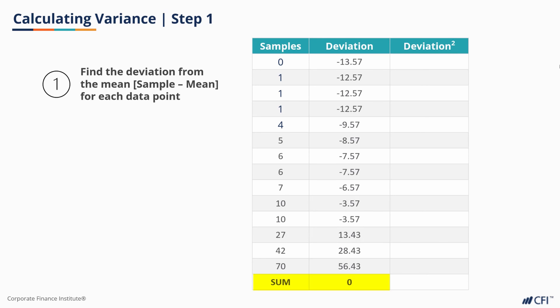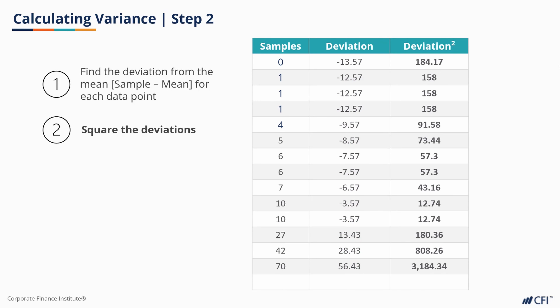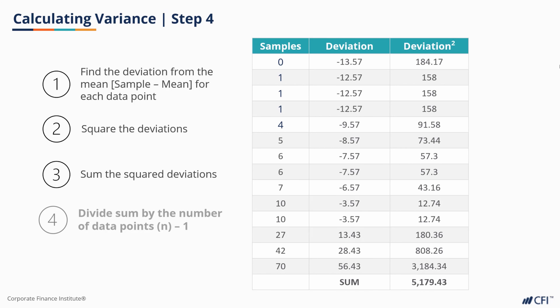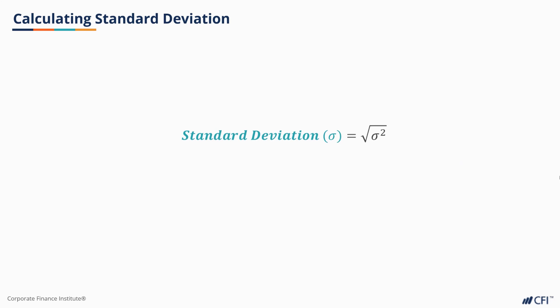So we have an issue. Some of our samples are negative and some are positive, causing our negative and positive samples to just cancel each other out. For that reason, we insert an extra step of squaring each number. Now all our numbers are positive. We'll then take the sum of these numbers and divide by the number of points we have minus 1. This is our variance, represented by a lowercase sigma squared. Once we've calculated our variance, finding our standard deviation is easy. The standard deviation equals the square root of our variance and is represented by a lowercase sigma. Often, you'll see the variance written simply as the standard deviation squared. If we square our standard deviation, we get right back to our variance.